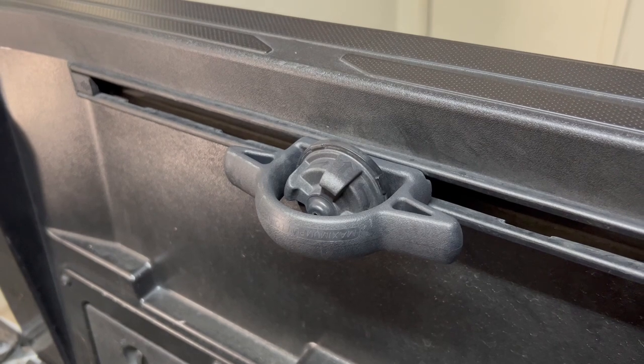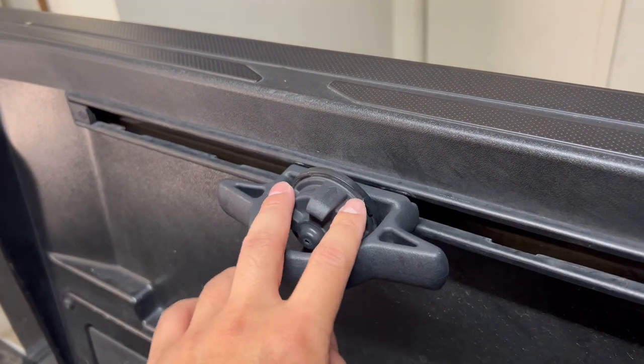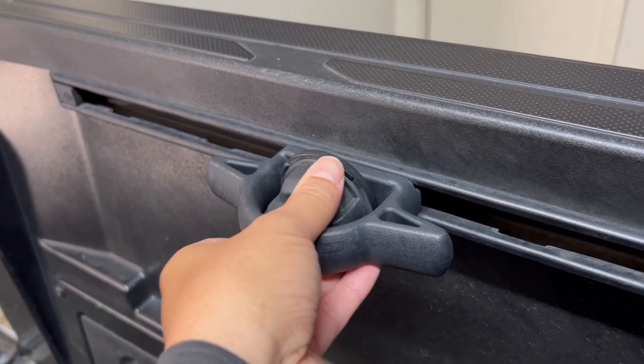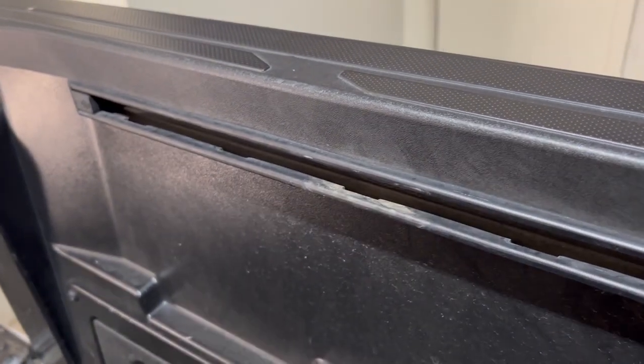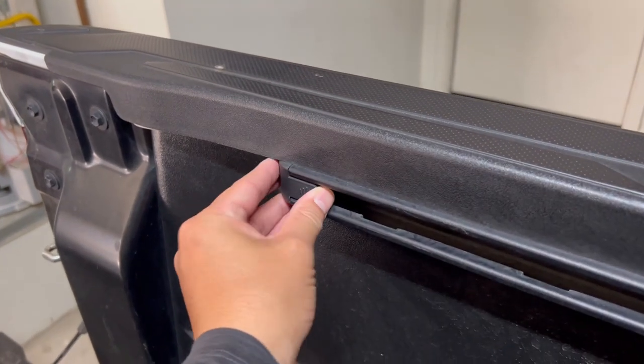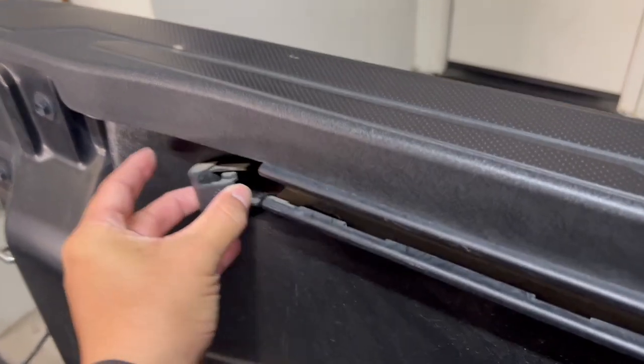To make the installation a little bit smoother, you can go ahead and remove your bed cleats if you have them. So you just have to twist them, push them in and turn it. In order to install the mounting clamps, you will go ahead and remove the bed rail clips. You just push them in and pull them out.